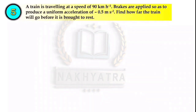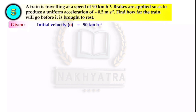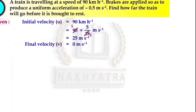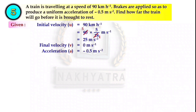Question number 5: A train is traveling at a speed of 90 kilometer per hour. Brakes are applied to produce a uniform acceleration of -0.5 m/s². Find how far the train will go before it is brought to rest. Initial velocity is 90 km/h — convert to m/s — we get U = 25 m/s. Final velocity V = 0 m/s. Acceleration A = -0.5 m/s².